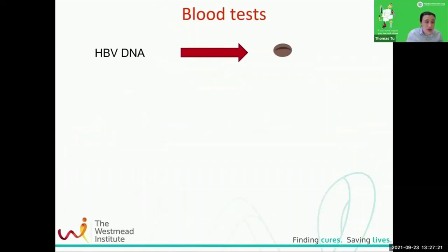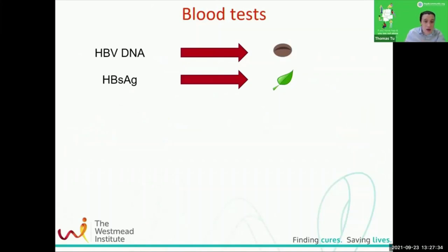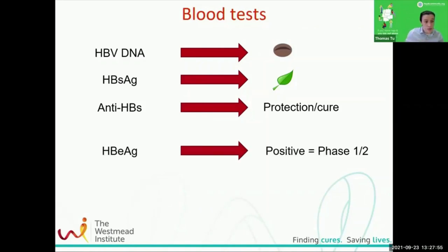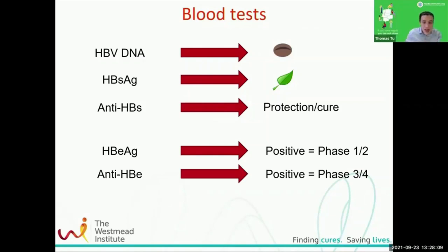When we're doing blood tests, we're trying to figure out what's actually happening in the liver. HBV DNA tests for the amount of virus in the blood. Surface antigen measures the amount of leaves in the blood — when we get an immune response against surface antigen and clear it all away, we know that without those leaves you can't produce new trees, so that person is protected or cured. E antigen is used to determine whether you're early on in the first two phases or later on in the latter two phases.